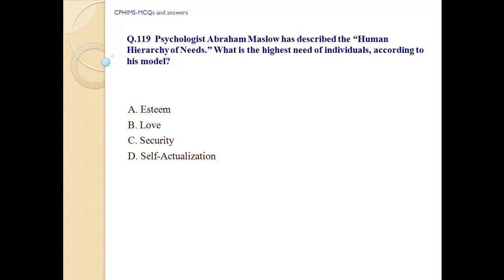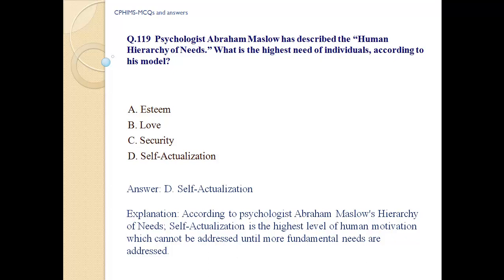Question number 119. Psychologist Abraham Maslow described the human hierarchy of needs. What is the highest need of individuals according to his model? A) Esteem, B) Belonging, C) Security, D) Self-actualization. Answer: D, self-actualization. According to Maslow's hierarchy of needs, self-actualization is the highest level of human motivation, which cannot be addressed until more fundamental needs are met.